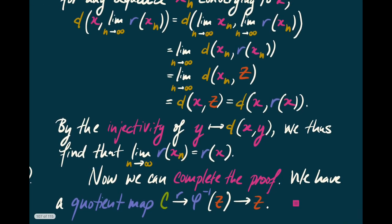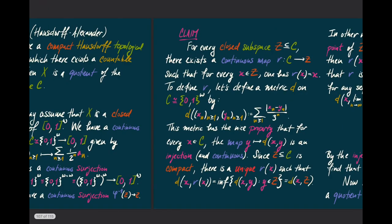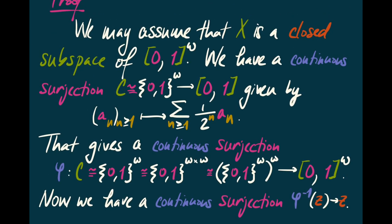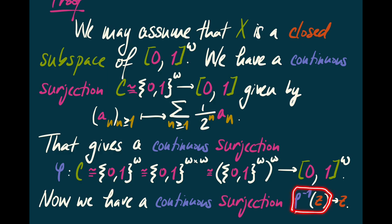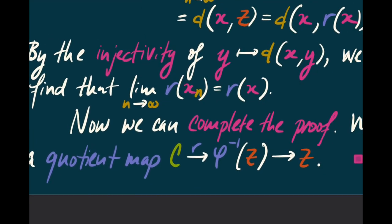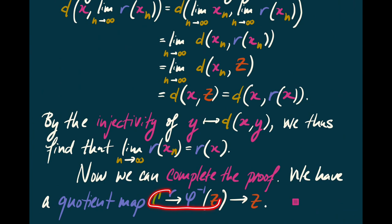The upshot: we have a continuous surjection from C to the inverse image of Z — which is a closed subspace of the Cantor space. That gave us a continuous surjection from the inverse image to Z. Since any closed subspace of the Cantor space has a retraction mapping back to it, we use that retraction to map onto the inverse image and compose it with the surjection. Since this is a map between two compact Hausdorff spaces, it's automatically a quotient map. That completes the proof of the Hausdorff-Alexandroff theorem.